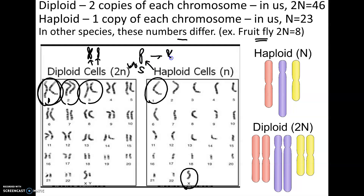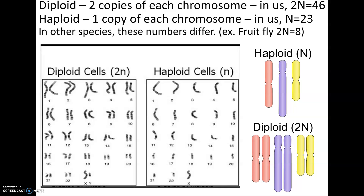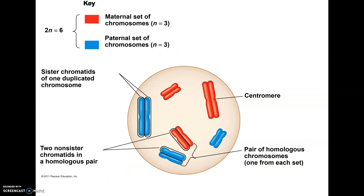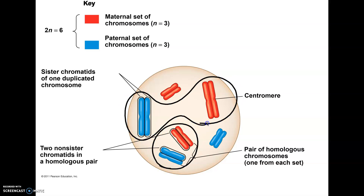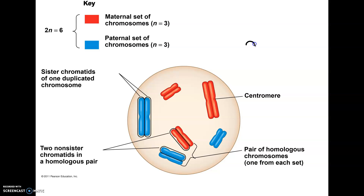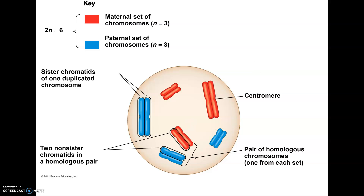Haploid and diploid have nothing to do with whether chromosomes look like sticks or X-shapes — it's about how many copies you have of each chromosome. Another illustration shows a diploid cell with chromosomes colored in two colors: maternal chromosomes from the mom and paternal chromosomes from the dad. Each color pair is a homologous pair. With three homologous pairs, the 2n number is six; the haploid number n would be three, so a sperm or egg would have one random copy of each chromosome.